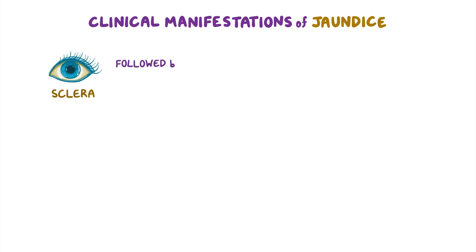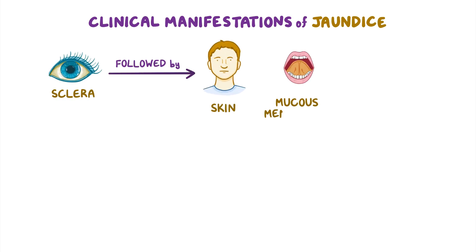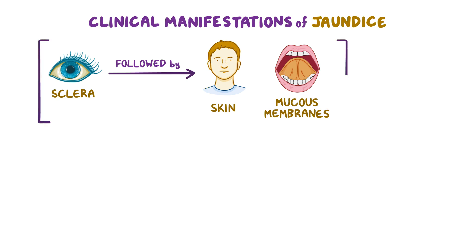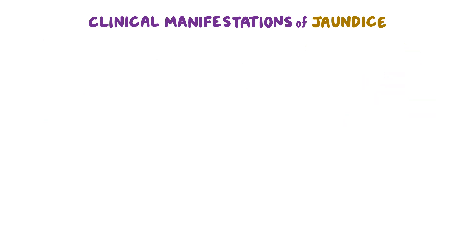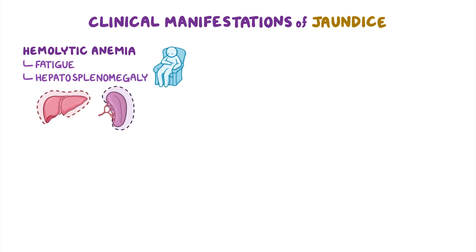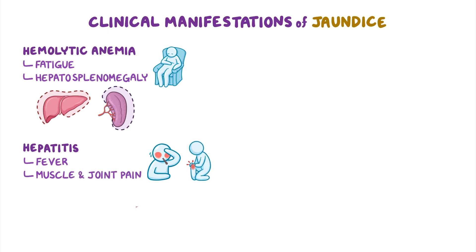The first clinical manifestation of jaundice is the yellowish discoloration of the sclera, followed by yellowish discoloration of the skin and mucous membranes. This discoloration can often be accompanied by pruritus. Additional signs and symptoms can vary depending on the underlying cause. For example, clients with hemolytic anemia may present with fatigue and hepatosplenomegaly. Another example is hepatitis, which can be associated with fever, muscle and joint pain, and hepatomegaly.